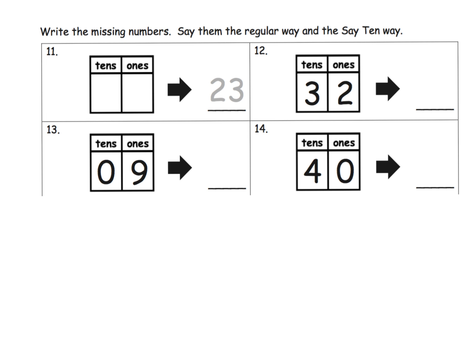Lastly, we're going in reverse. Now we've got the value in the place value chart and we want to write in the missing number. Say them the regular way and the say 10 way. So what's the number? The number itself is 32.